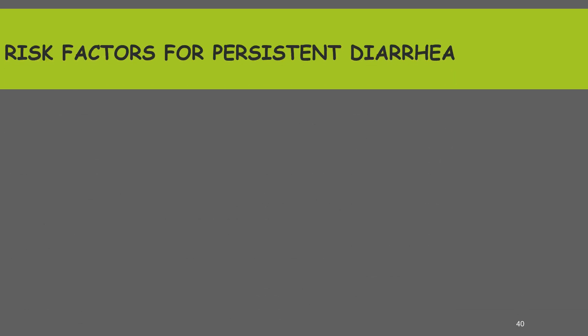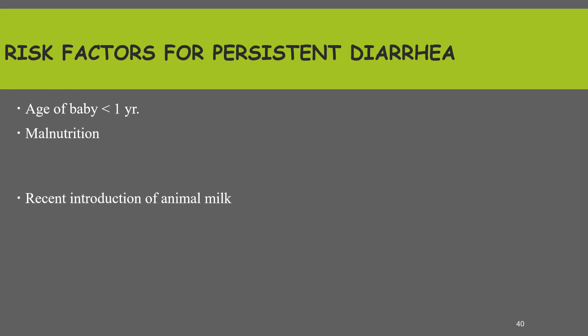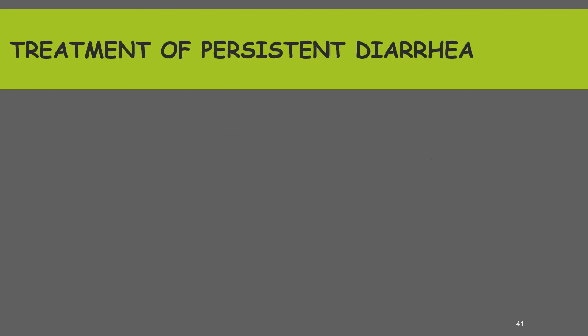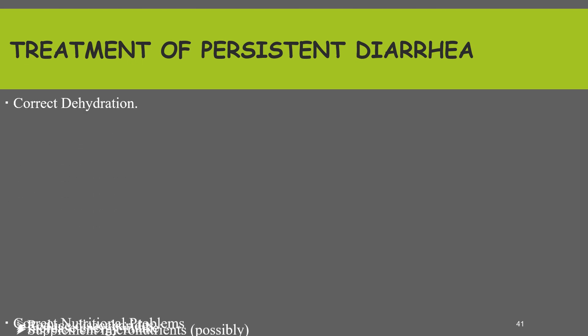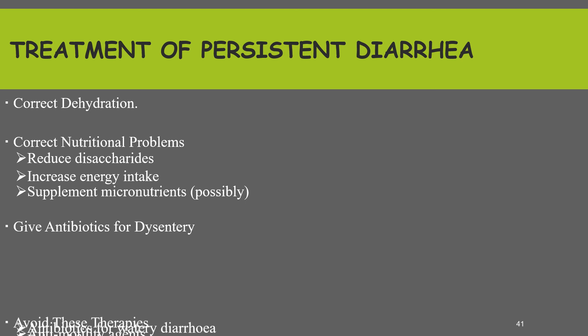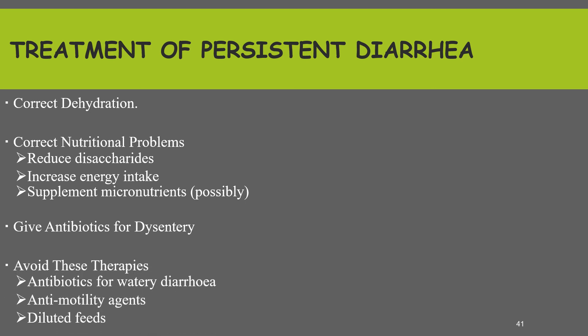Risk factors for persistent diarrhea include age less than one year, malnutrition, recent introduction of animal milk, and recent acute diarrhea — and recent acute diarrhea is itself a risk factor for persistent diarrhea. Treatment of persistent diarrhea: correct dehydration if the child is dehydrated, correct nutritional problems, reduce disaccharides and increase energy intake, supplement micronutrients, give antibiotics for dysentery, and avoid antibiotics for watery diarrhea, anti-motility agents, and diluted feeds.